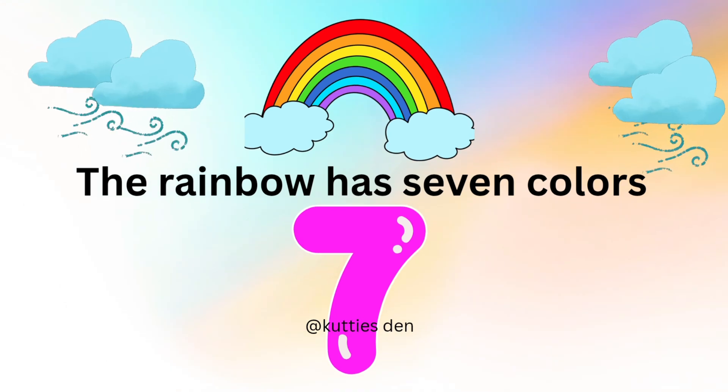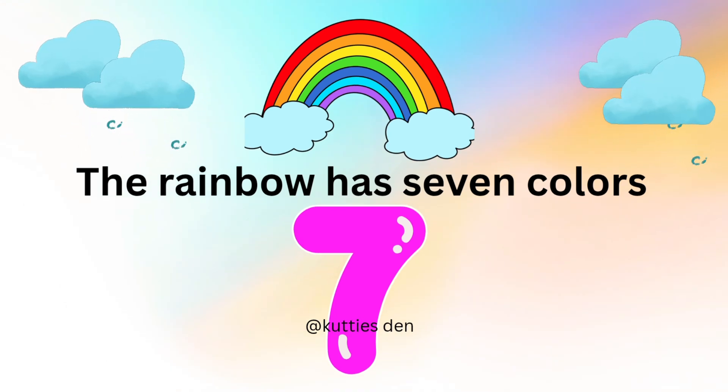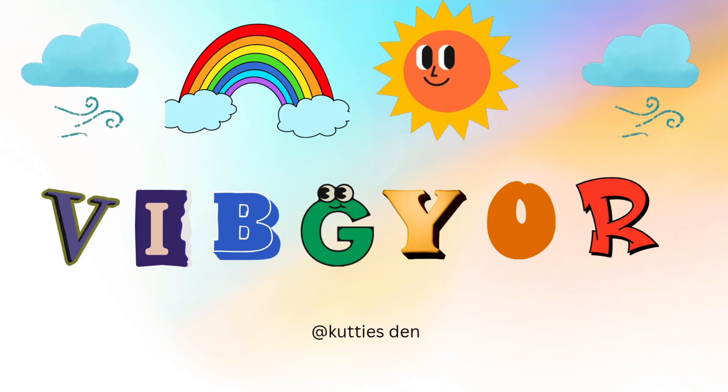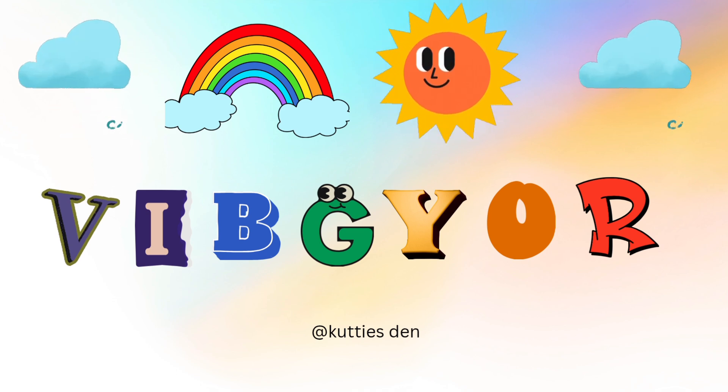The rainbow has seven colors: V, I, B, G, Y, O, R.